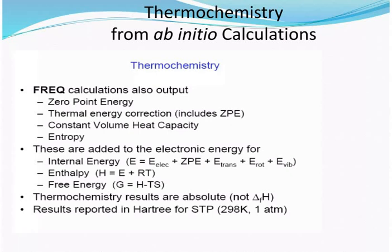Then free energy. Because you now know the H value, G is equal to H minus TS, where T is the temperature and S is the entropy — the randomness of the system — and H is enthalpy. So you can calculate the Gibbs free energy.